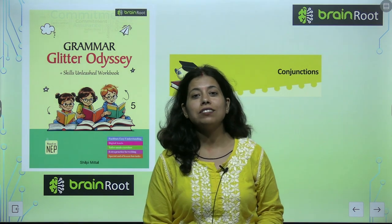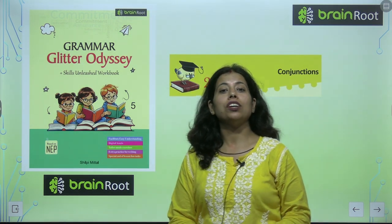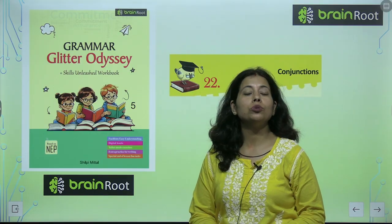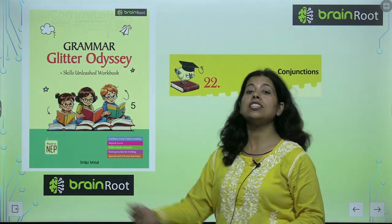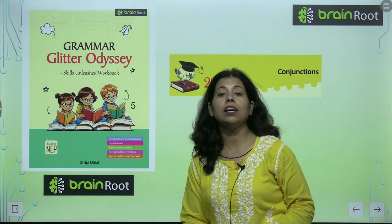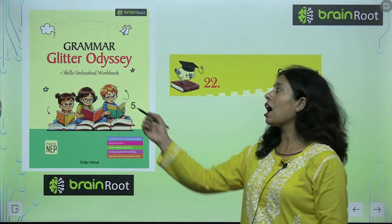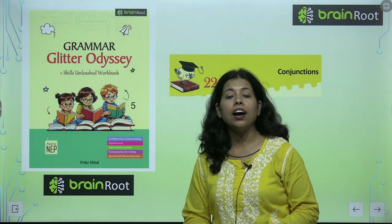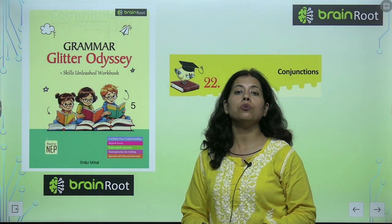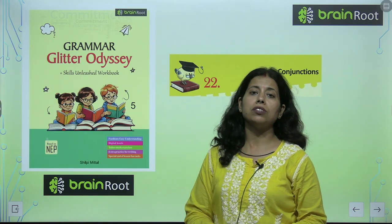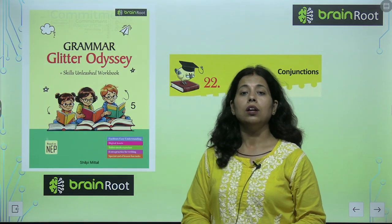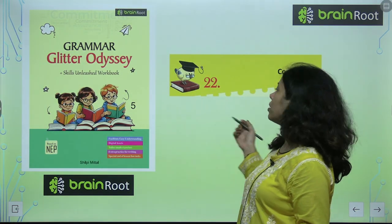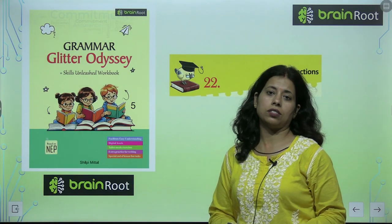Good morning young champs. I am your trainer Puja. Today I will welcome you to the class of English grammar and the name of the book is Grammar Glitter Odyssey of grade 5 by Brain Root, and it's a product of Amit Publishing House. So today we will start chapter number 22, that is conjunctions.